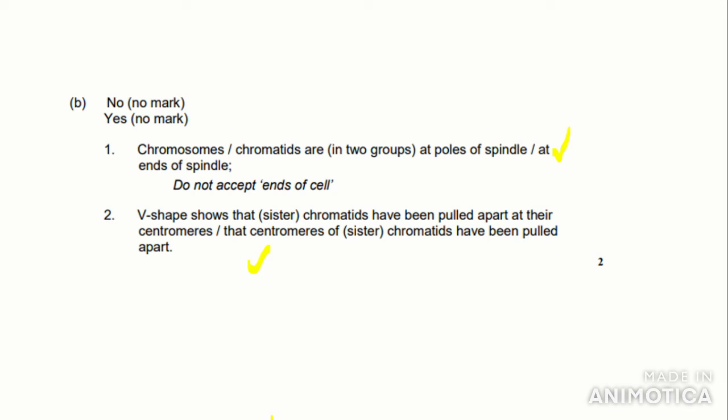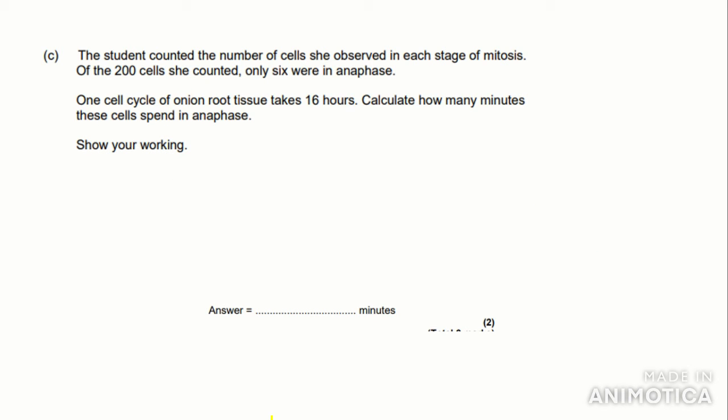So let's get on to the next question. This is a maths question, which is everyone's favorite. The student counted the number of cells she observed in each stage of mitosis. Of the 200 cells she counted, only six were in anaphase. One cell cycle of onion root tissue takes 16 hours. Calculate how many minutes these cells spend in anaphase. Show your working. So as this says show your working, it often means like one of the marks comes from your working out rather than both coming from the answer.